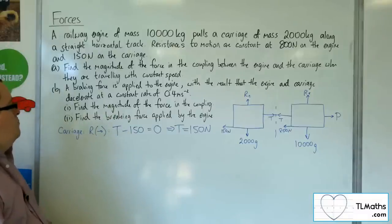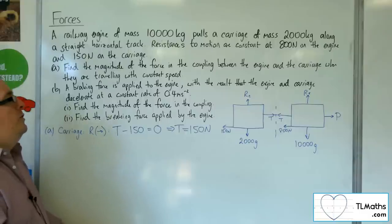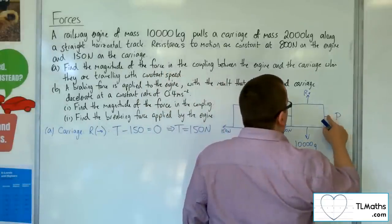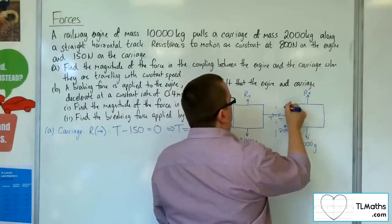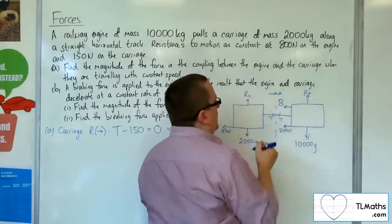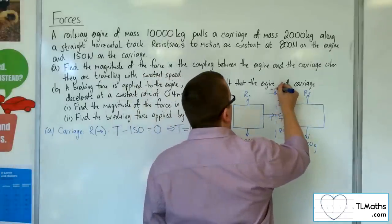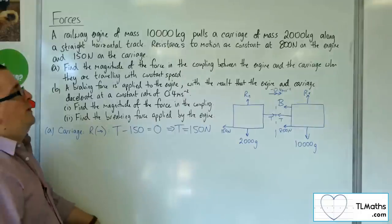For Part B, a braking force is applied to the engine, with the result that the engine and carriage decelerate at a constant rate of 0.4 metres per second per second. So now we have this braking force - let's call it B. We are now accelerating at minus 0.4 metres per second per second, i.e., decelerating at 0.4 m/s².